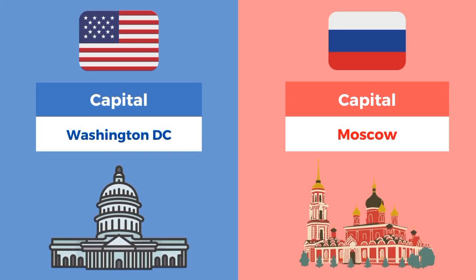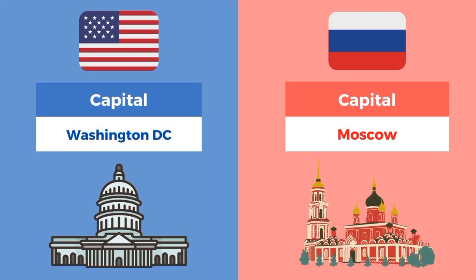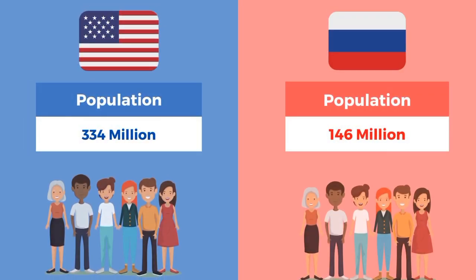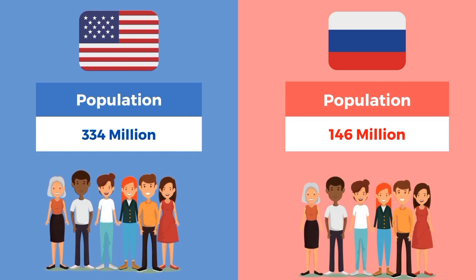The capital of the United States is Washington DC and the capital of Russia is Moscow. The total population of the United States is 334 million and the total population of Russia is 146 million.